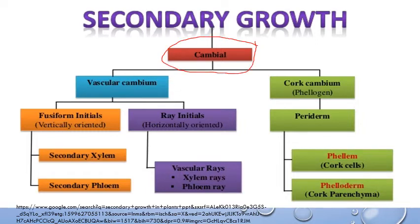In cambium, there are two important factors: one is vascular cambium and the other is cork cambium. These two types of meristematic cells are responsible for secondary growth in plants. Vascular cambium is formed by two types of initials: fusiform initials, which are vertically oriented, and ray initials, which are horizontally oriented. Fusiform initials are responsible for the formation of secondary xylem and secondary phloem, while ray initials are responsible for the formation of xylem rays and phloem rays, and they help in radial conduction.